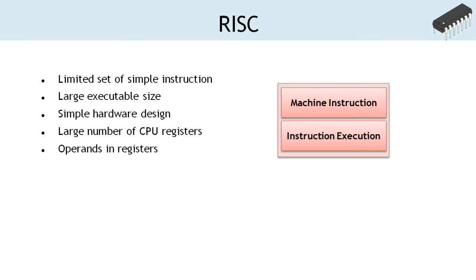The RISC architecture provides a limited yet simple set of instructions. These instructions carry out a simple step during program execution. Since the instructions are simple, these are executed mostly in a single clock cycle and most instructions are encoded using fixed word width. The underlying hardware design is also simpler compared to that of a CISC processor.